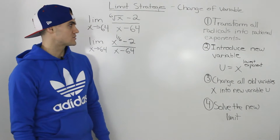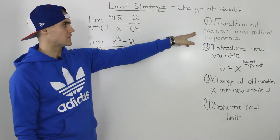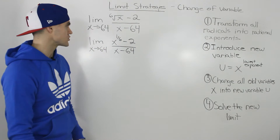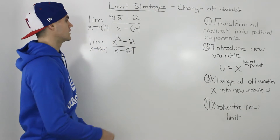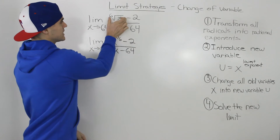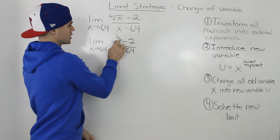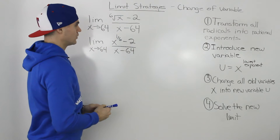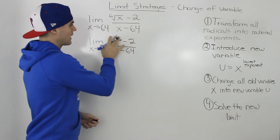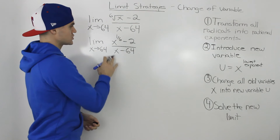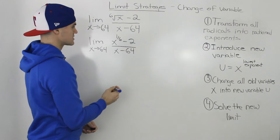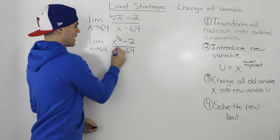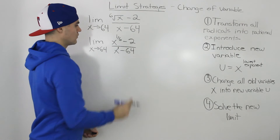Step 1 in the change of variable strategy: transform all radicals in the limit into rational exponents. So we take the sixth root of x and rewrite it as x to the power of 1 over 6. There are no other radicals, so everything else stays the same. The plain x is like x to the power of 1.